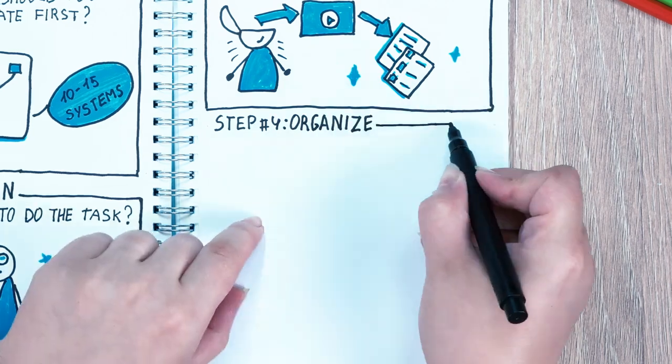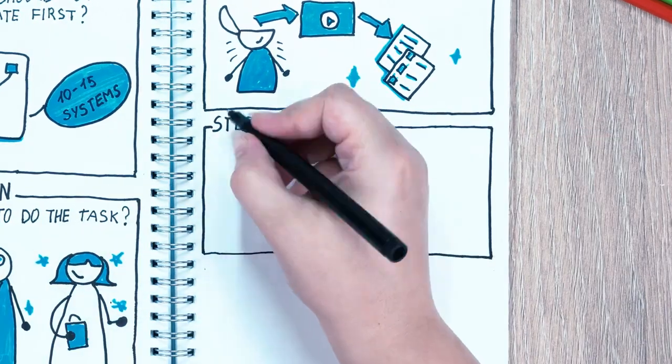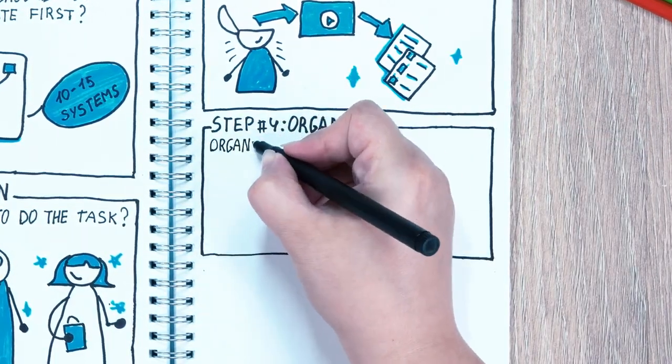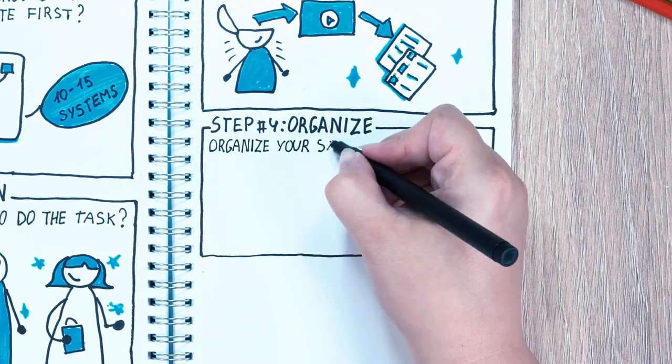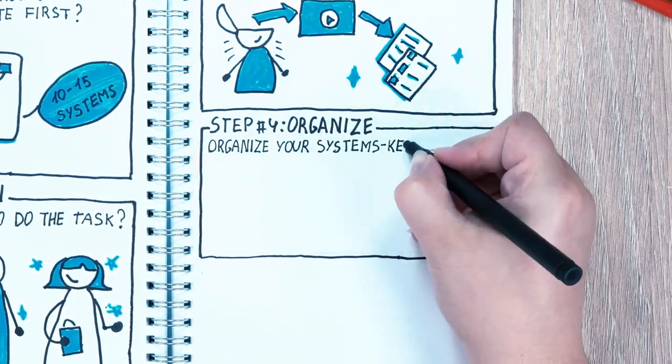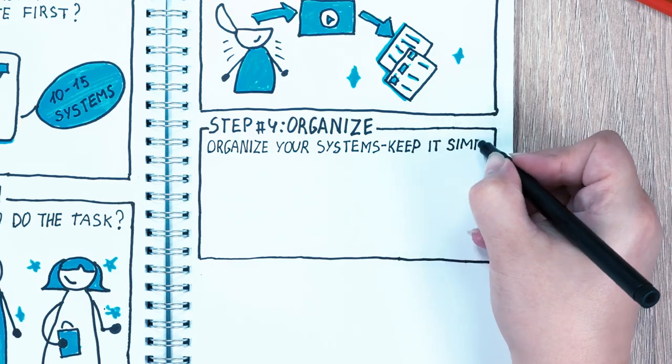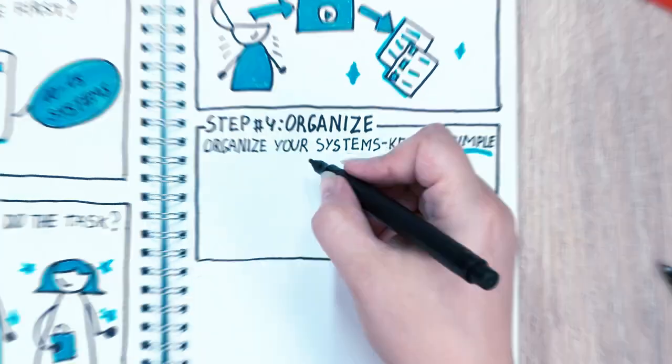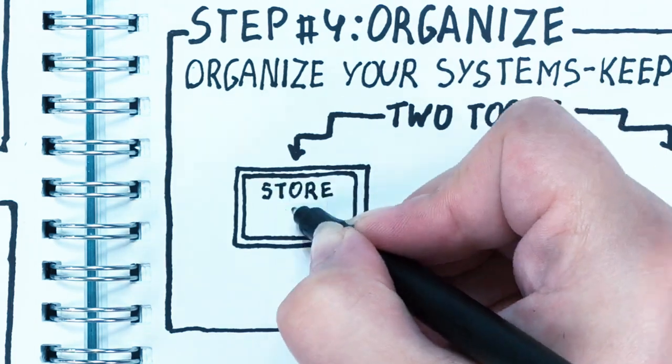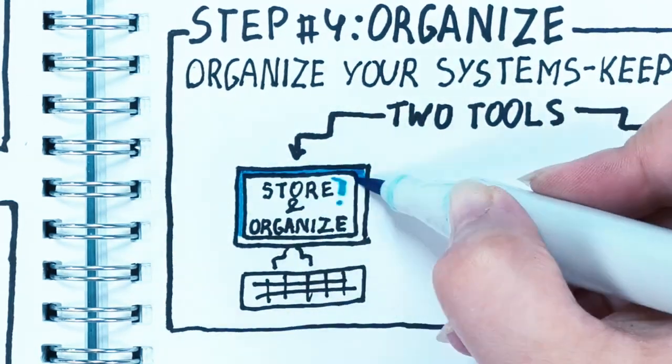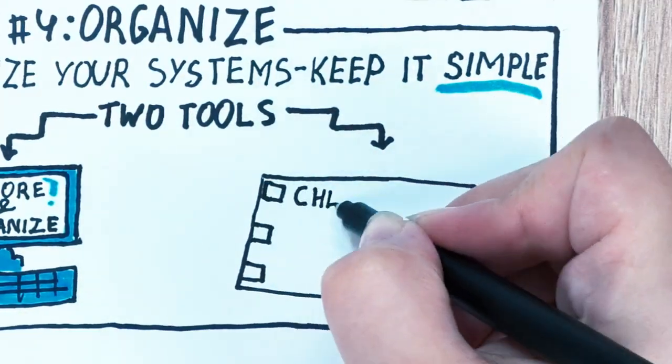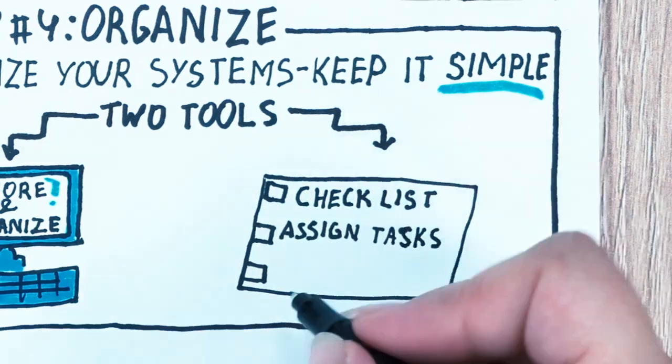Step number four is organize. In this step, Jennings addresses the myth that business systemization requires complex software to execute. He believes the opposite is true. Simplicity is key. He believes you only need two key tools: software to store and organize your systems, and software to assign tasks and ensure compliance.